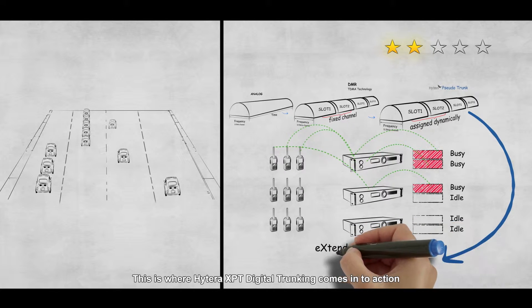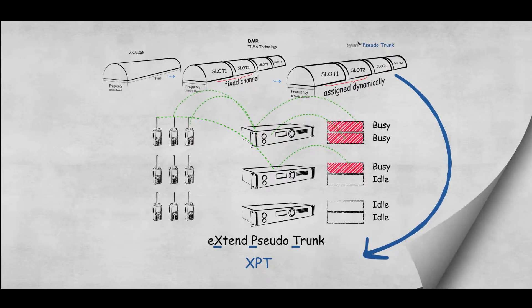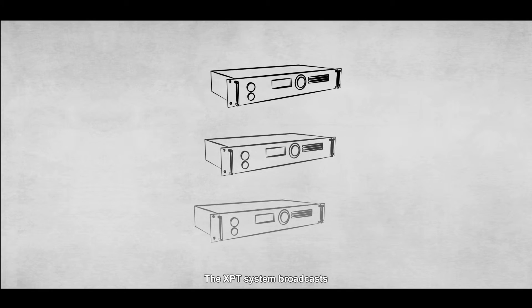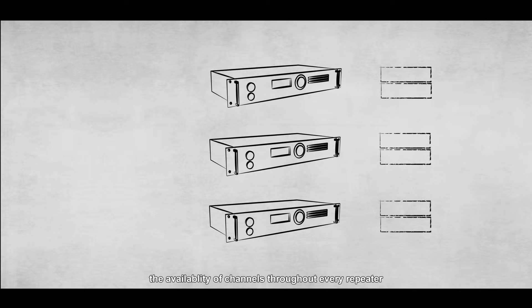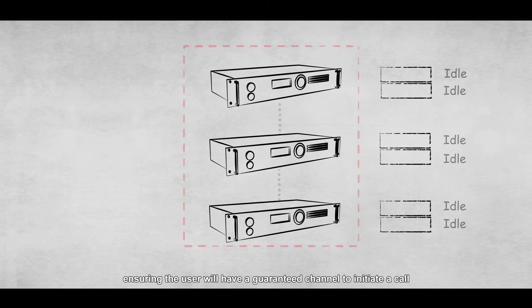This is where Hytera XPT Digital Trunking comes into action. So how does it work? The XPT system broadcasts the availability of channels throughout every repeater, ensuring the user will have a guaranteed channel to initiate a call.